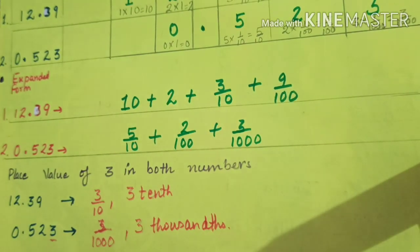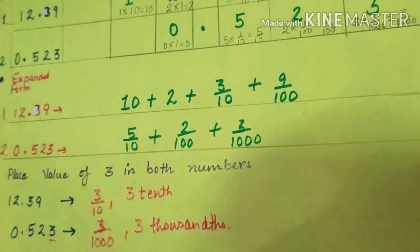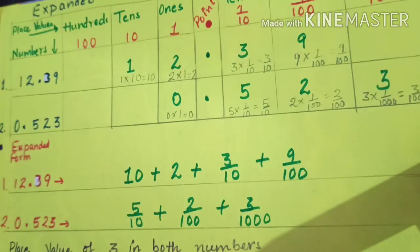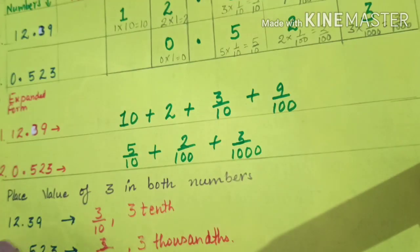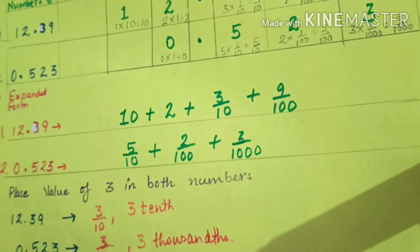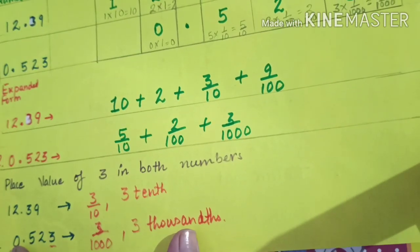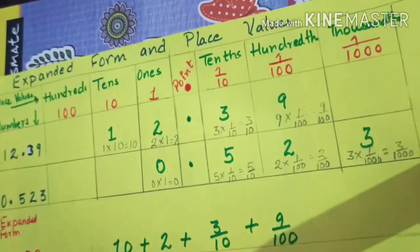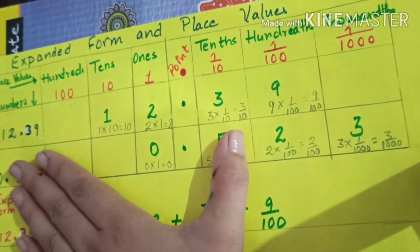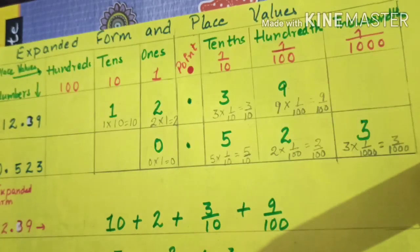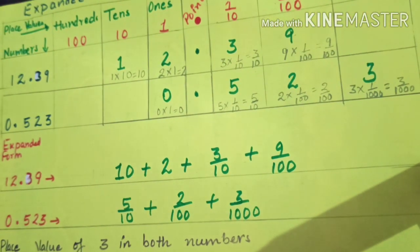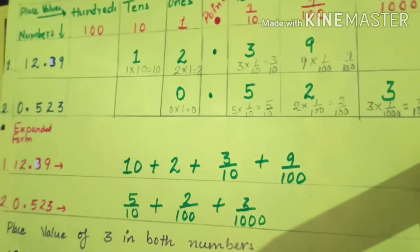In this lesson we discussed the expanded form — how to write it — and how to find the place value of each digit. I hope you all understood. Just remember the place value chart and you will be able to find the expanded form and place value. Thank you and have a nice day.